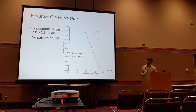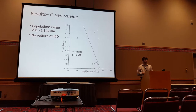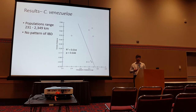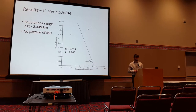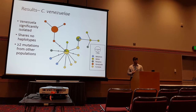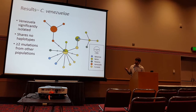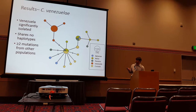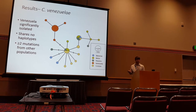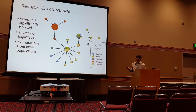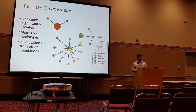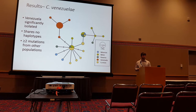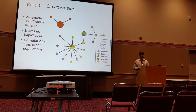Starting with venezueli, the population range spanned about 200 to 2,400 kilometers, and as is typical for many marine taxa, they showed no trend of isolation by distance. But when looking at the haplotype network, focusing on Venezuela in orange, it is significantly isolated from the rest of the Caribbean — it shares no haplotypes with any other Caribbean populations and is consistently at least two mutational steps away. When looking at pairwise genetic divergence between populations, it did show a strong trend of isolation.